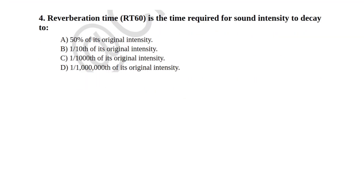We will go to the next question. The second question is: the time required for sound intensity to decay to — Option A, 50% of its original intensity; Option B, one-tenth of its original intensity; Option C, one-thousandth of its original intensity; Option D, one-millionth of its original intensity. The right answer is Option D — one-millionth of its original intensity.